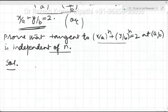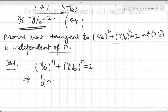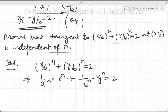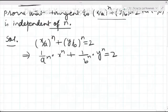The given equation is (x/a)^n + (y/b)^n = 2, which can be rewritten as (1/a^n)·x^n + (1/b^n)·y^n = 2. To find the slope of the tangent, we will differentiate this with respect to x on both sides.